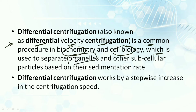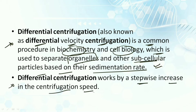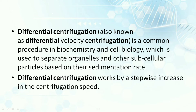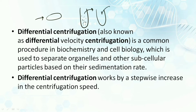Differential centrifugation separates organelles and subcellular particles based upon their sedimentation rate. It works by stepwise increase in centrifugation speed. We take a sample containing many cells and expose it to a high-speed machine. In that machine, we increase the velocity in order to separate the organelles we are focusing upon and the other subcellular particles. This complete separation is mainly based upon the sedimentation rate.